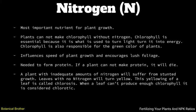First up we have nitrogen. Nitrogen is the most important nutrient for your plant growth. Plants cannot make chlorophyll without nitrogen. Chlorophyll is essential because it is what is used to turn light into energy, and it is also responsible for the green color of your plants. Nitrogen influences the speed of plant growth, encourages lush foliage, and is needed to form protein — if a plant cannot make protein it will die. A plant with an inadequate amount of nitrogen will suffer from stunted growth, and leaves with no nitrogen will turn yellow. This yellowing of a leaf is called chlorosis; when a leaf can't produce enough chlorophyll it is considered chlorotic.